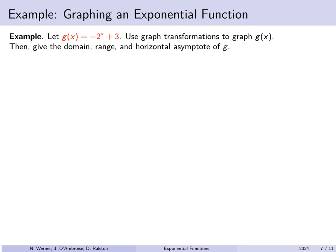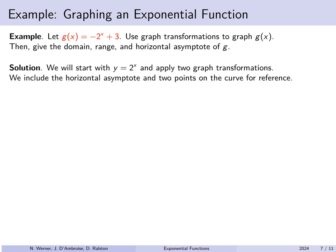Let's do an example of graphing an exponential function. Let g of x equal negative 2 to the x plus 3. Note that the base is positive 2 — we have 2 to the x, multiply by negative 1, then add 3. We'll use graph transformations. Starting with y equals 2 to the x: it contains the point (0, 1) and (1, 2), and has horizontal asymptote y equals 0.